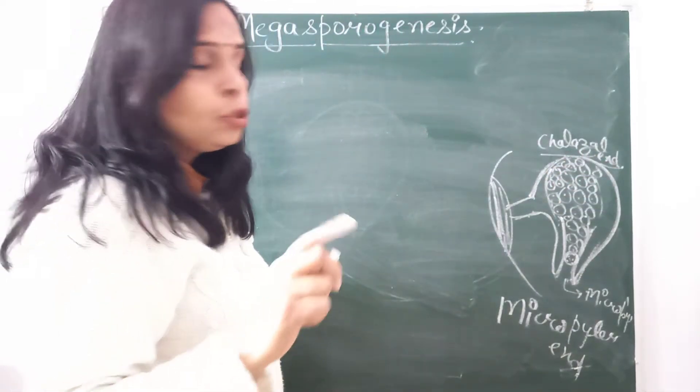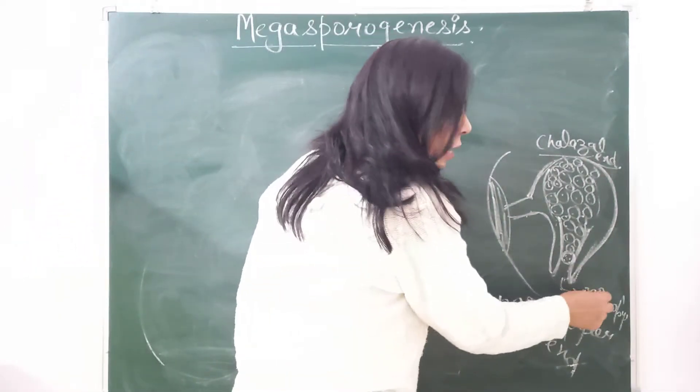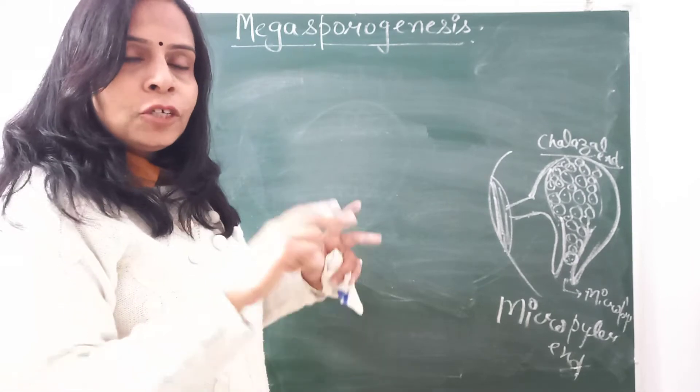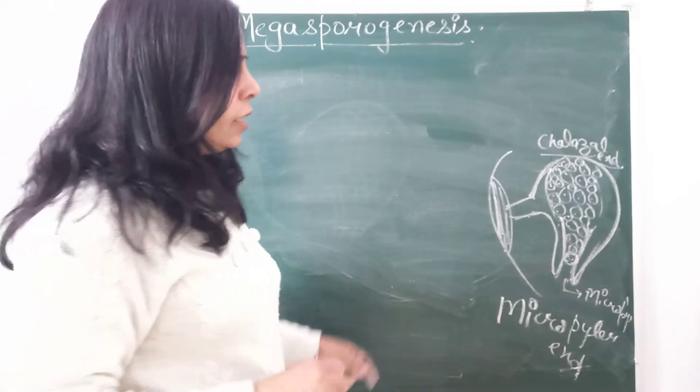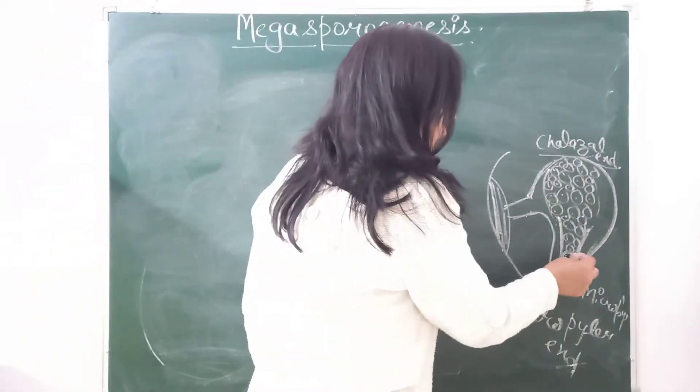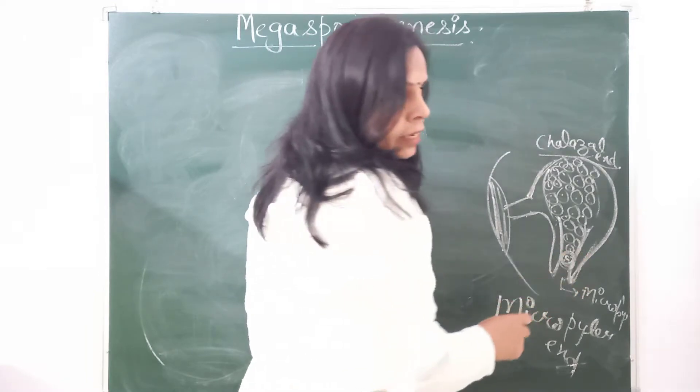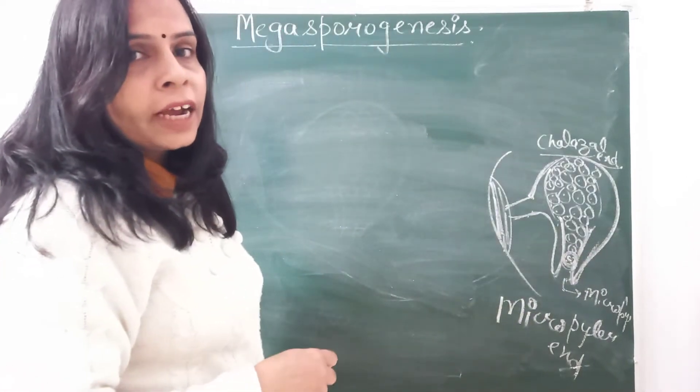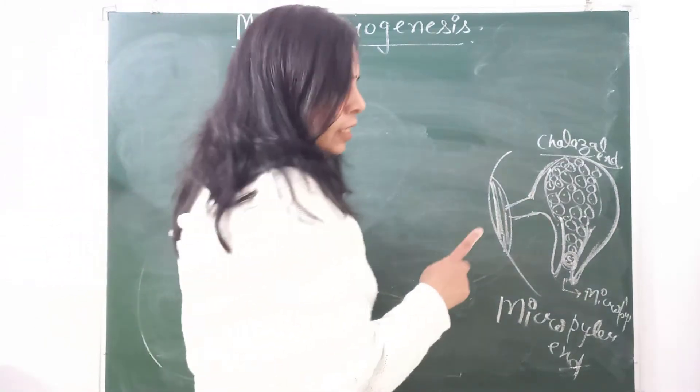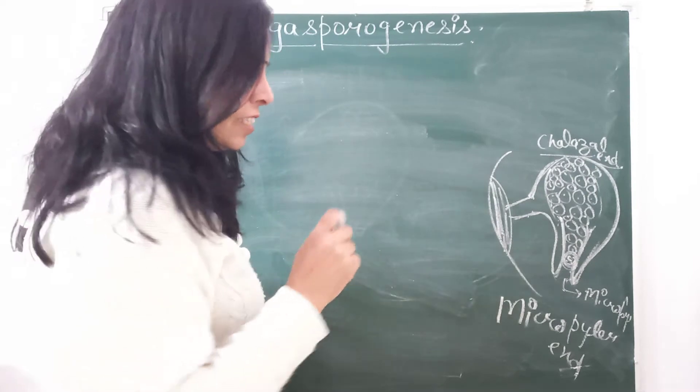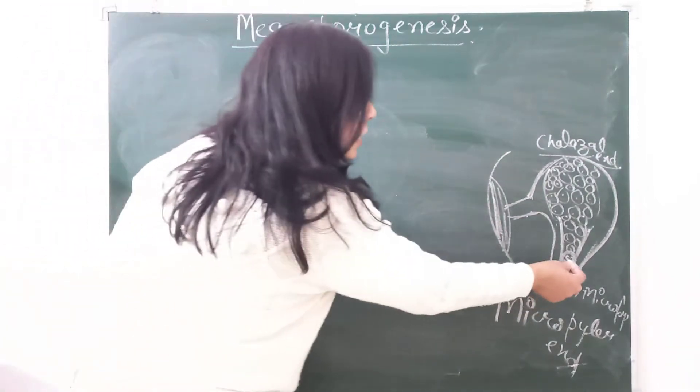Only one cell towards the micropylar end specializes itself. This cell will form the megaspore. This megaspore mother cell, as it is going to give rise to megaspores, is known as megaspore mother cell. It is with dense cytoplasm and it is diploid.